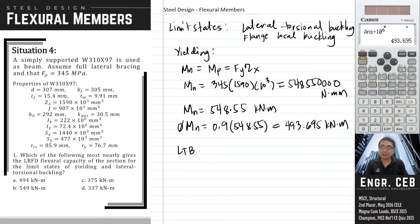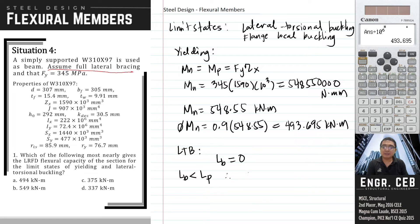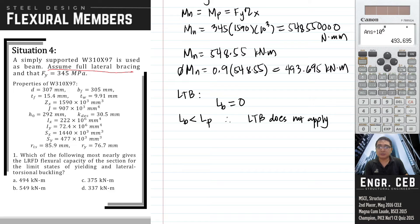For LTB (lateral torsional buckling), the capacity depends on the unbraced length. The problem states to assume full lateral bracing, so the unbraced length is zero, and we fall into the category where L_B is less than L_p. This means LTB does not apply. Therefore, we only use the yielding limit state as the basis for the nominal strength and the LRFD flexural capacity. Our answer for this problem is 493.65 kN·m, and the nearest answer is letter A.